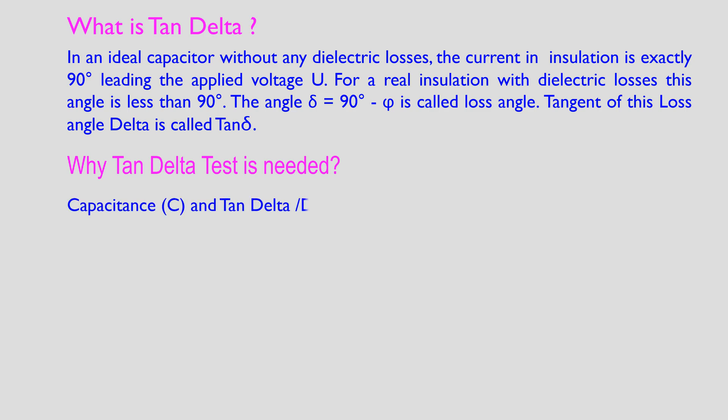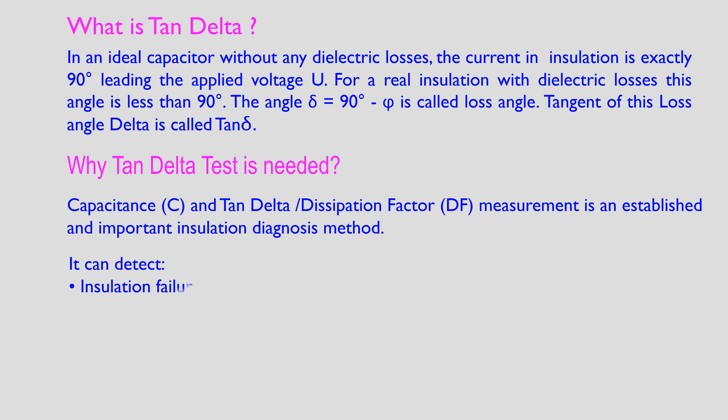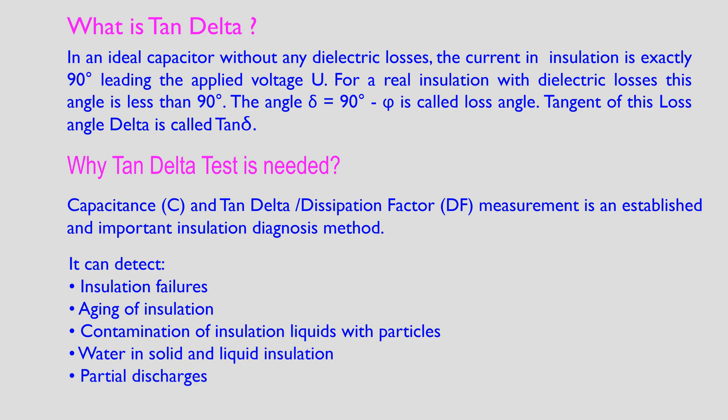Capacitance C and tan delta, also called dissipation factor DF measurement, is an established and important diagnosis method. It can detect insulation failures, aging of insulation, contamination of insulation liquids with particles, water in solid and liquid insulation, and partial discharges.